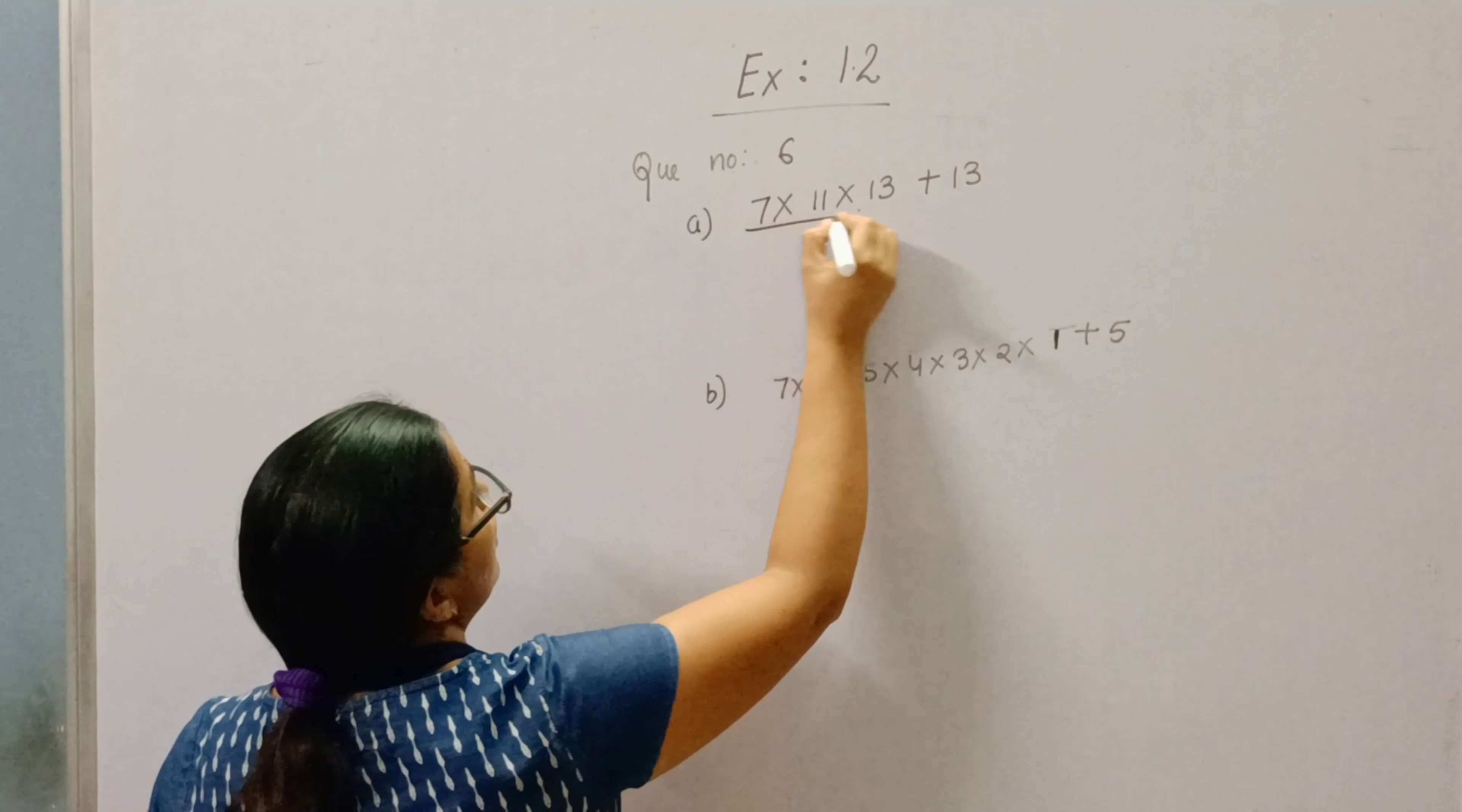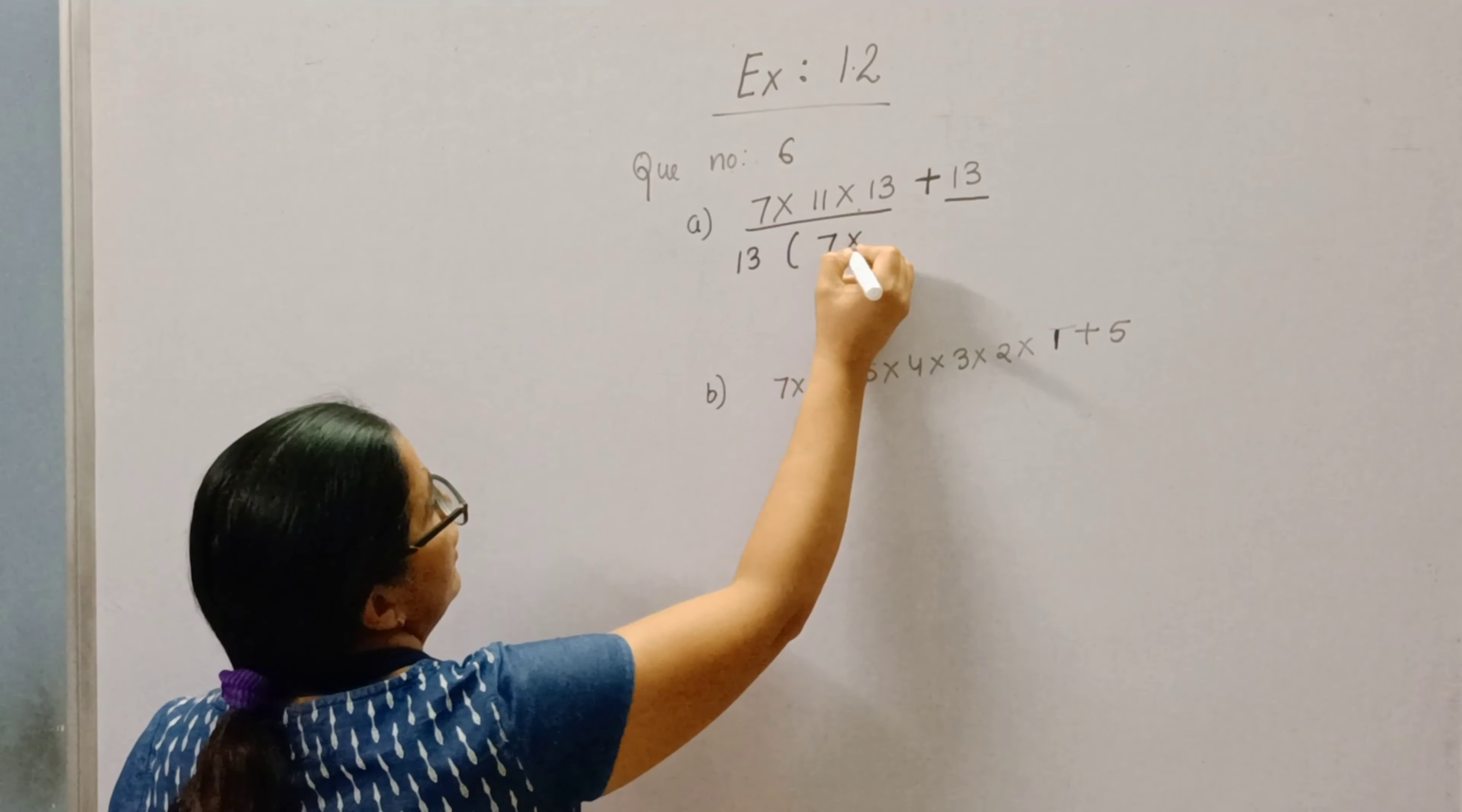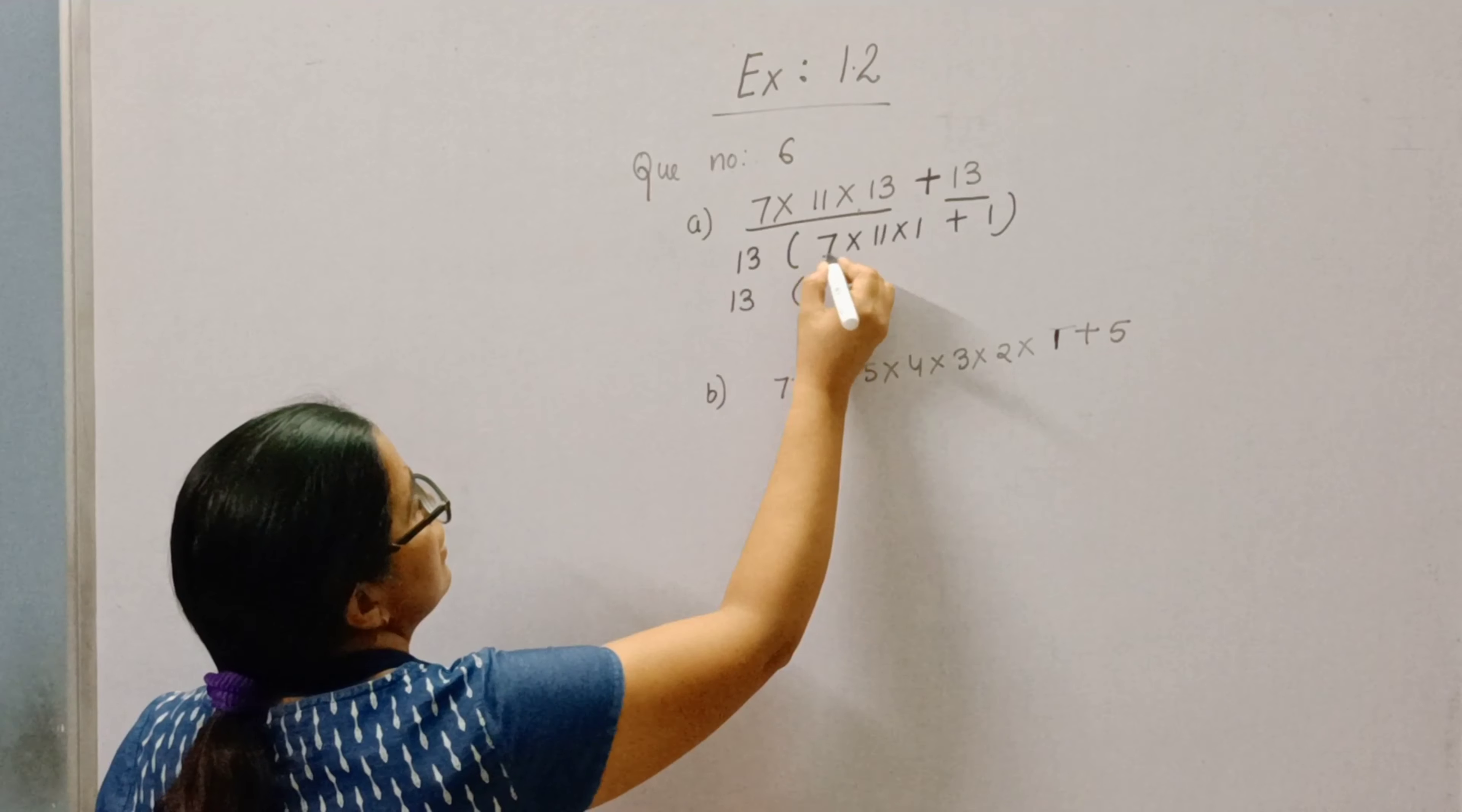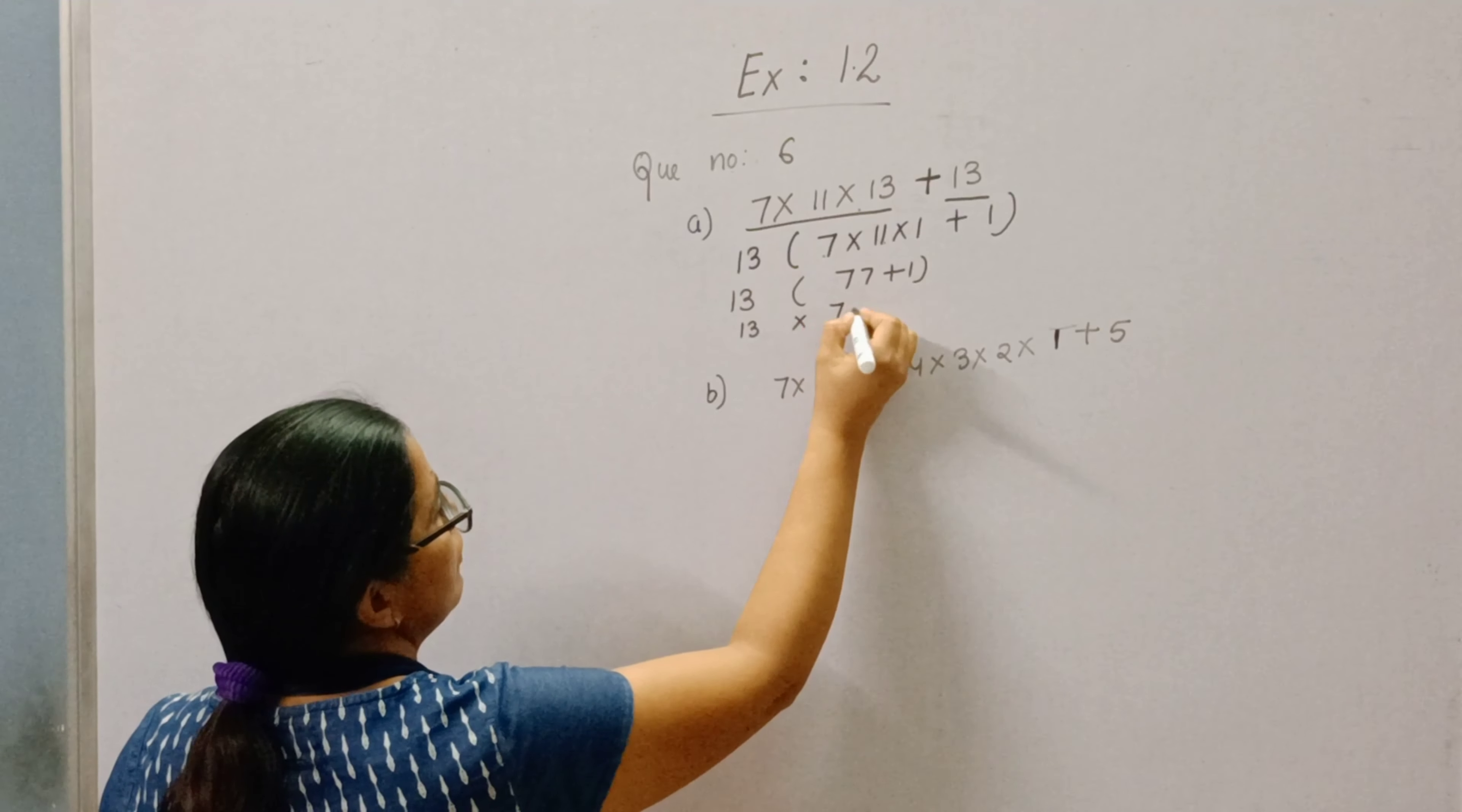First of all you can see there are two terms, first and second. So what is common in these two terms? 13. Take out 13 as common: 13 into 7 into 11 into 1 plus 1. Now multiply this. 7 into 11 is 77, into 1 is 77 plus 1. 13 into 77 plus 1 is 78.